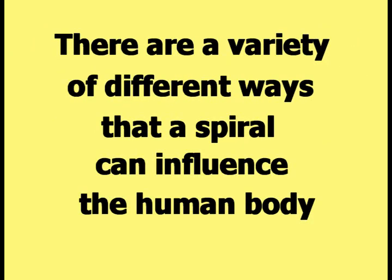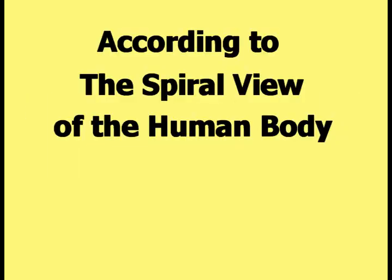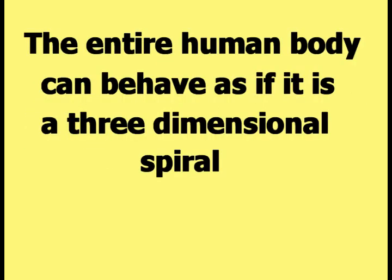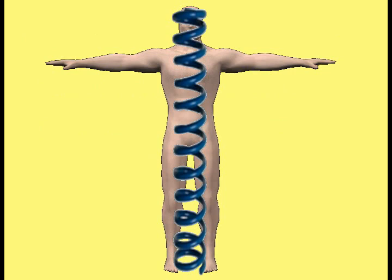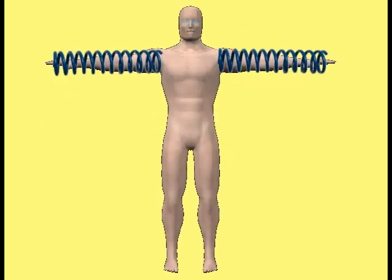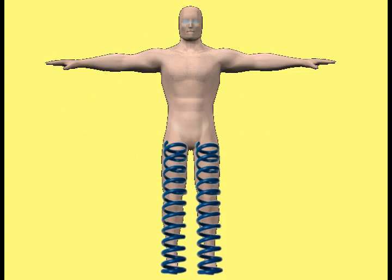There are a variety of different ways that a spiral can influence the human body. This picture shows a three-dimensional spiral with a uniform diameter from one end to the other. Various parts of the body can behave as if they are a uniform diameter spiral. The entire human body can behave as a three-dimensional spiral running from the top of the head down to the feet, the arms from shoulders to hands, and the legs from hips to feet.